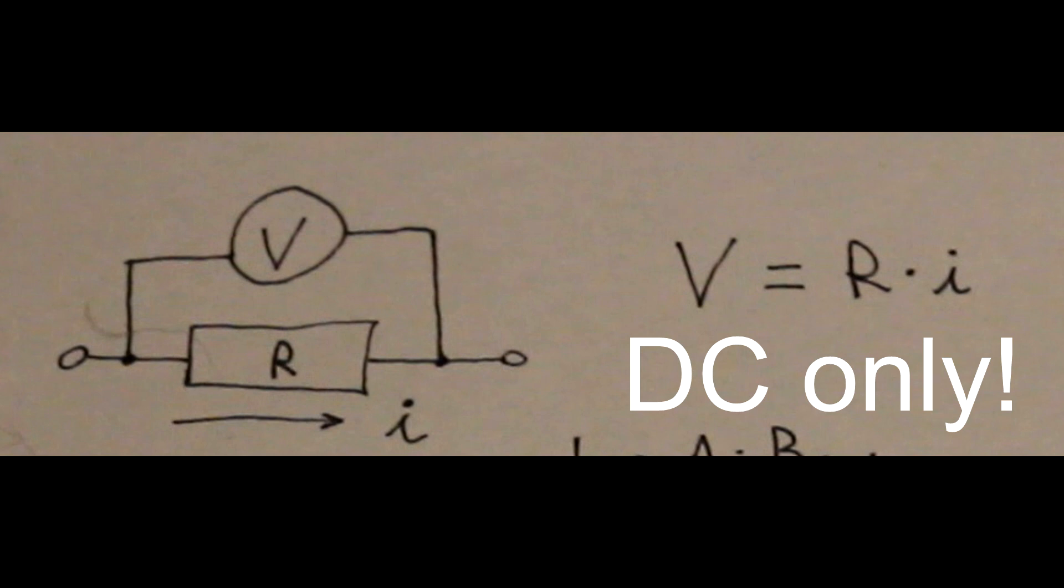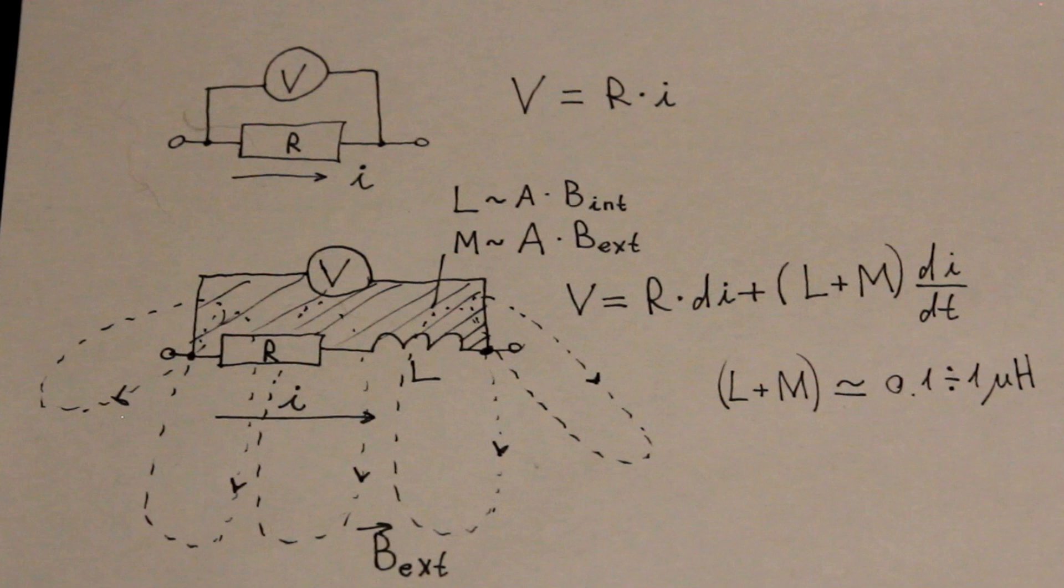With pulsed currents and high frequencies everything gets a little more complicated. A more realistic model of a shunt resistor looks somewhat like this.